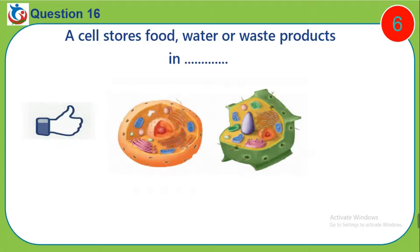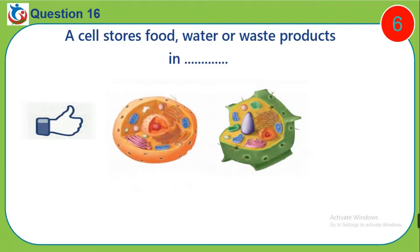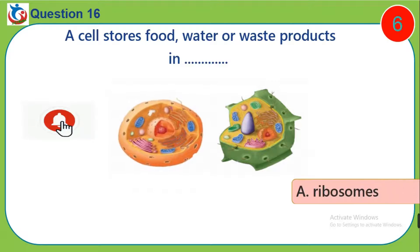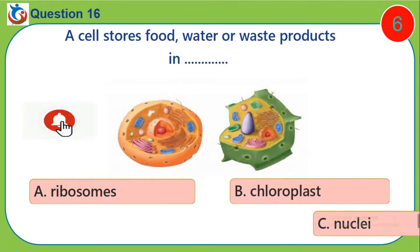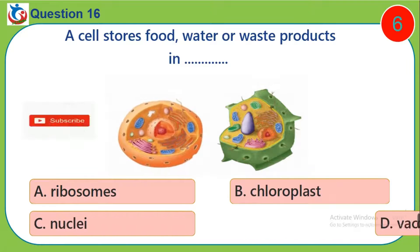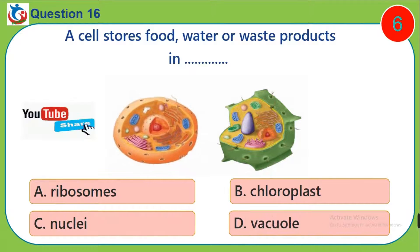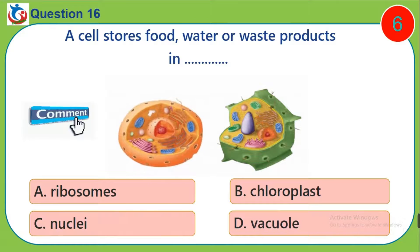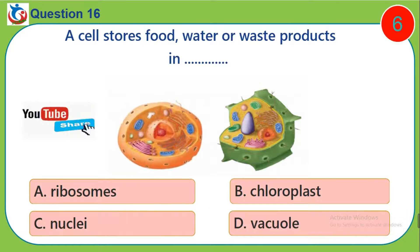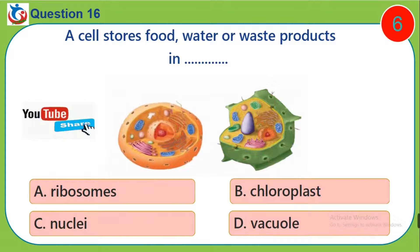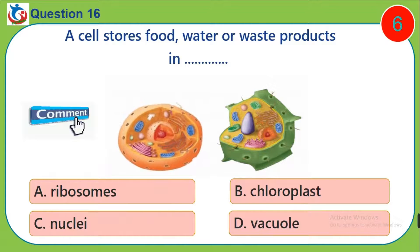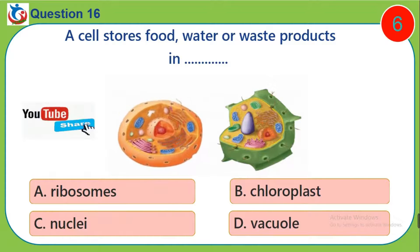Question 16. A cell stores food, water, or waste products in? A. Ribosomes. B. Chloroplasts. C. Nucleus. D. Vacuole.